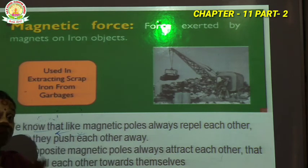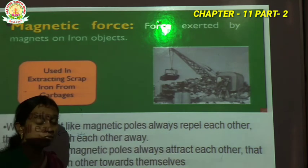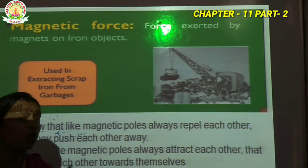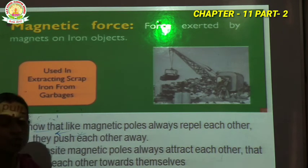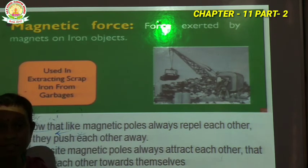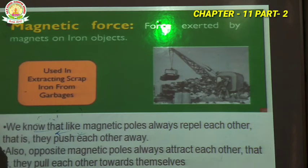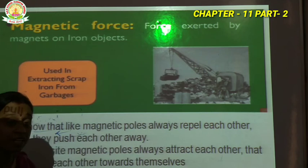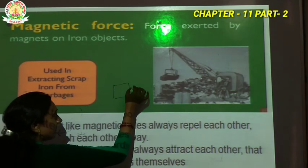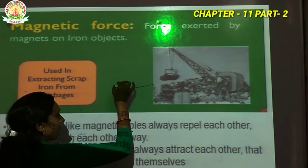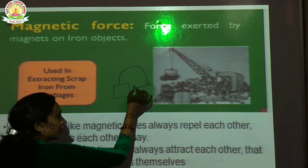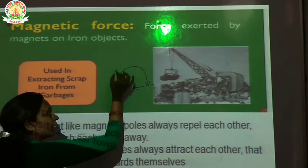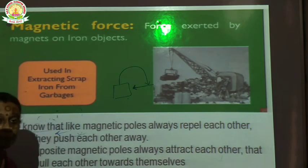Magnets exert force on which objects? A magnet exerts force on objects made of iron, steel, nickel, and cobalt. Magnets cannot exert force on things made of wood or plastic. Force exerted by magnets on iron objects — when iron nails, or an object made of steel or cobalt, are brought near a magnet, the magnet exerts a force on that object, and the object gets attracted towards it. The force exerted by a magnet on such objects is called magnetic force.